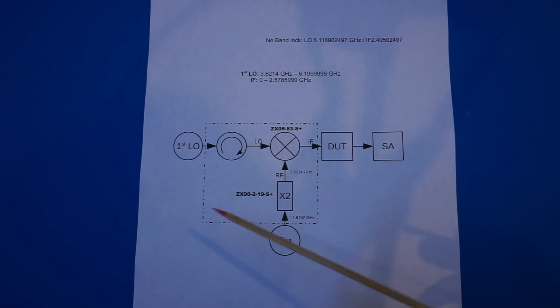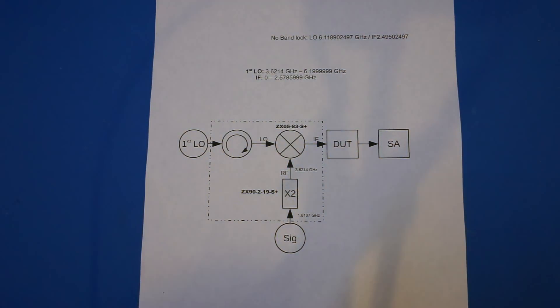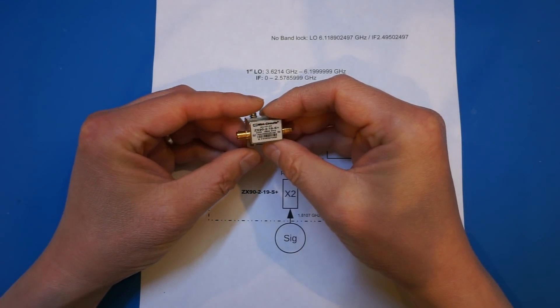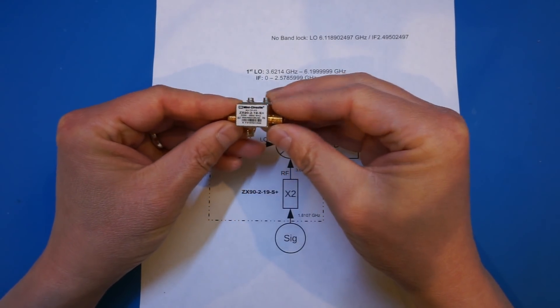Regardless, if we subtract that 3.6214 GHz signal from the first LO output, we get a 0 to 2.5 GHz tracking signal that is locked to the LO during the sweep. To generate that 3.6214 GHz signal, I used the HP 8642B frequency synthesizer to generate a 1.8107 GHz signal, and then frequency doubled to the desired IF using a mini-circuits ZX90-2-19 frequency multiplier, like the one I have here.